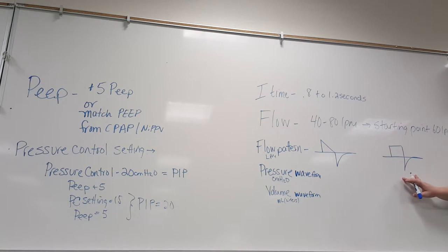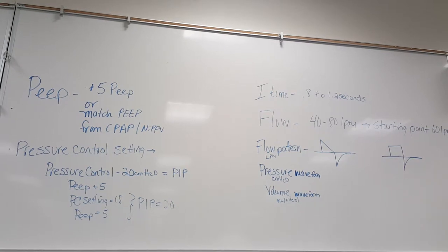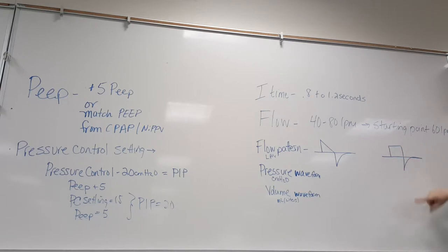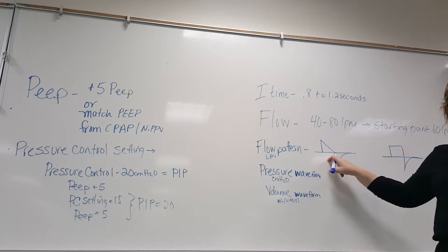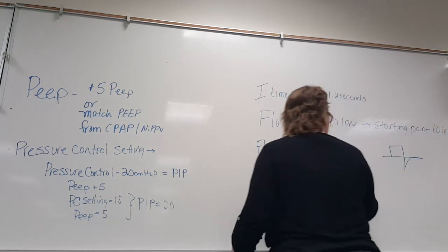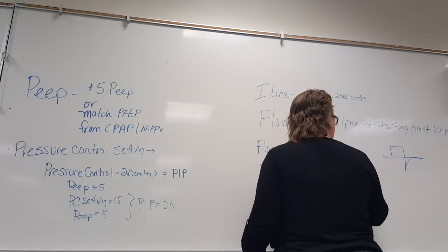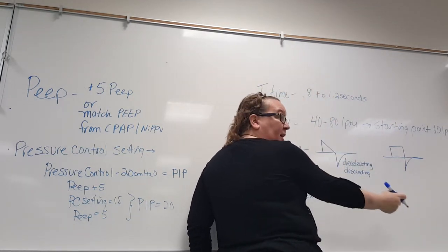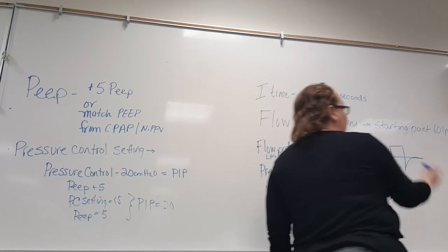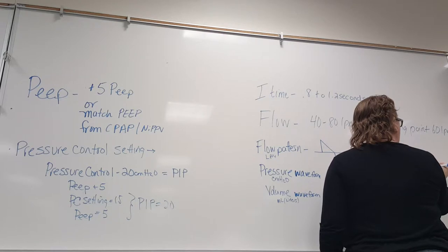The flow pattern shows how the flow is delivered in each breath. In the decelerating pattern, you get an initial burst of flow that slowly tapers off. In the square or constant pattern, the flow remains constant throughout the breath. The decelerating pattern is sometimes called descending because it starts with an initial burst and then decelerates or descends down.